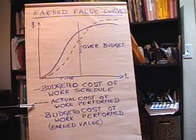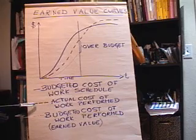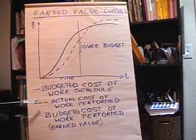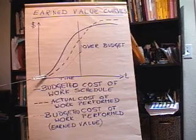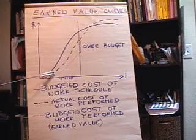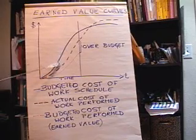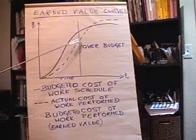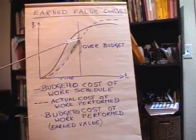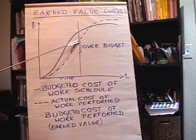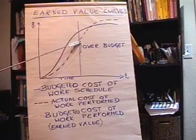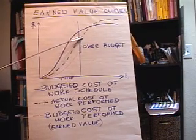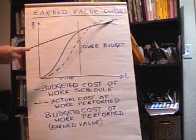The second curve, this dashed line, is the Actual Cost of Work Performed. This is actually how much we're spending over time. Notice that it's below the budget. As of today we've spent this much money on the project. If this continues — this is our projection — we're going to be over budget.